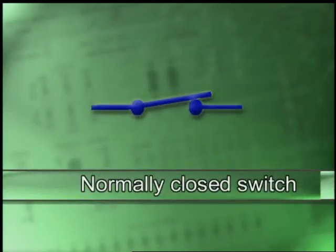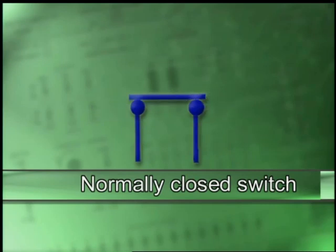A normally closed switch, one that is usually on, is shown as a closed gate between two dark gatepost circles, or as a heavy black bar that is across the tops of two black circles.